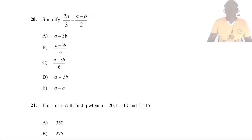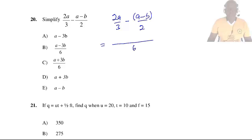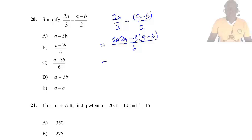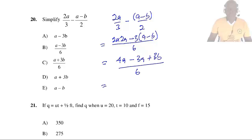Question 20: Simplify 2A/3 − (A − B)/2. Putting in brackets with LCM = 6: 2 × 2A = 4A, and 3 × (A − B) = 3A − 3B. So 4A − (3A − 3B) = 4A − 3A + 3B = A + 3B, all over 6. So the answer is C.